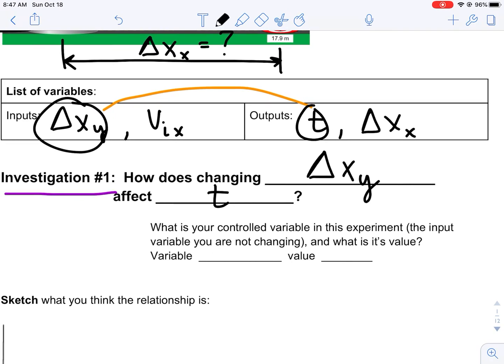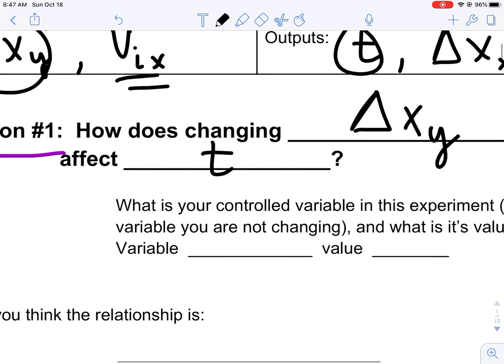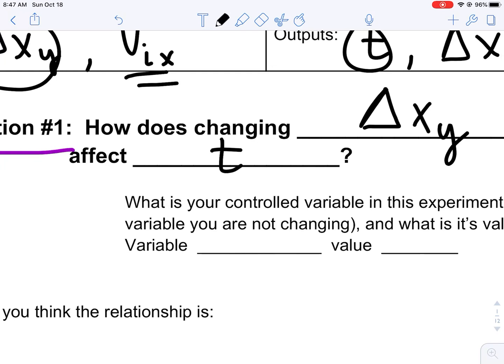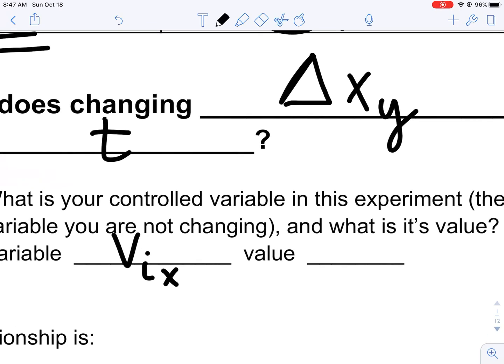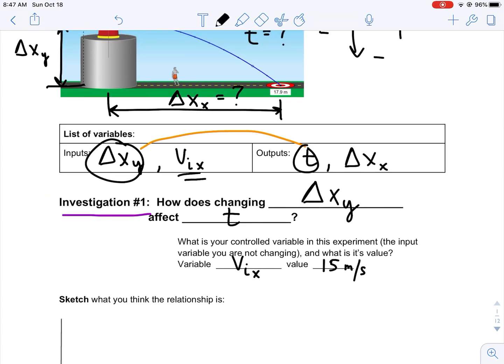My controlled variable, the thing that I can change that I'm not going to change while I collect my data, is the initial launch velocity. I'm not going to change that. So, v_ix. I need a set value that I'm going to use for all of my launches. I can choose anything I want. I'll just choose 15 meters per second. It's kind of like a middle value on the lab.